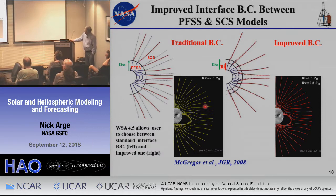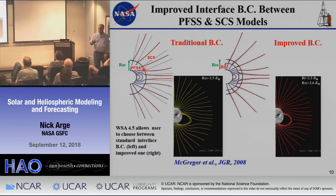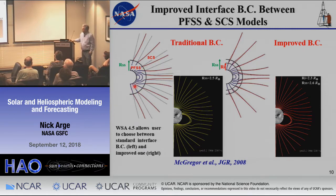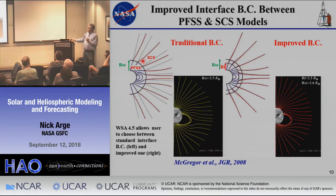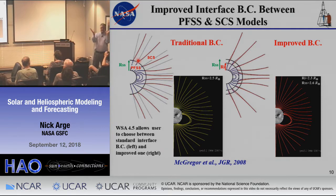A dirty little secret about coupling the Schatten model with the potential field model: the potential field model forces the field to be radial at its outer boundary — the source surface. That's just a construct, but the reality is it becomes radial too quickly. When the output of the potential field model feeds into the Schatten model, you give it BR, so by definition it's radial at that boundary, but on the other side you've given a radial condition so you then get kink artifacts.